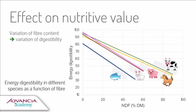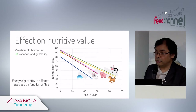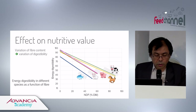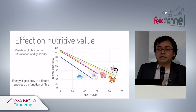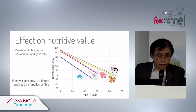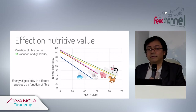Chemical composition variation has a direct effect on nutritional value. When there is variation in crude fiber (NDF), it has a direct effect on digestibility. The graph shows the general effect of NDF on energy digestibility across different species — every species responds differently, but each additional percentage point of NDF has a measurable effect on digestibility.